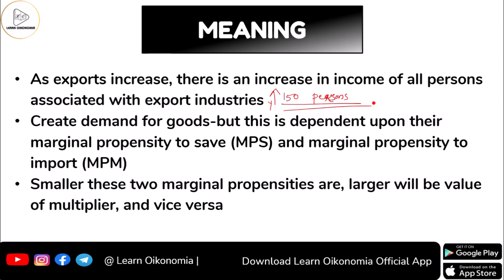Here we deal with the creation of demand for goods, which is dependent upon the marginal propensity to save and the marginal propensity to import. These two concepts are very important as far as the foreign trade multiplier is concerned. Whenever these propensities are smaller, the value of the multiplier would be larger, and vice versa — there exists an inverse relation.